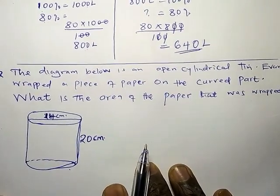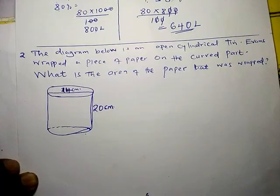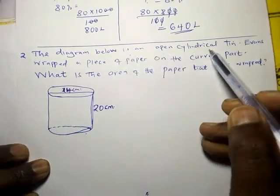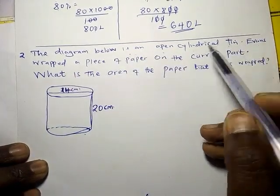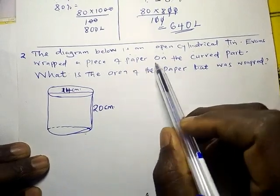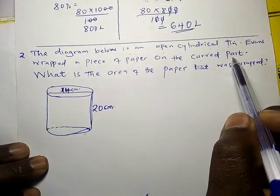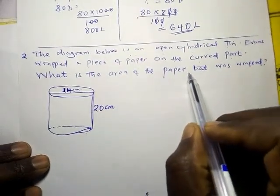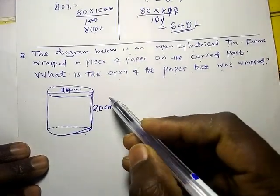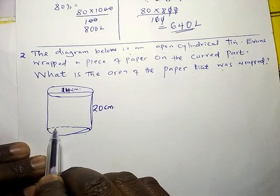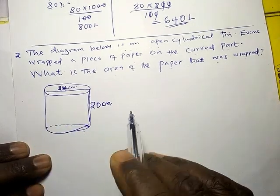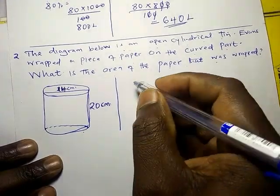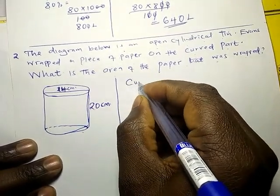Let us look at question two. The diagram below is an open cylindrical tin. Evans rubbed a piece of paper on the curved part. What is the surface area of this curved part? First you need to know the formula for calculating the curved surface area of a cylinder.